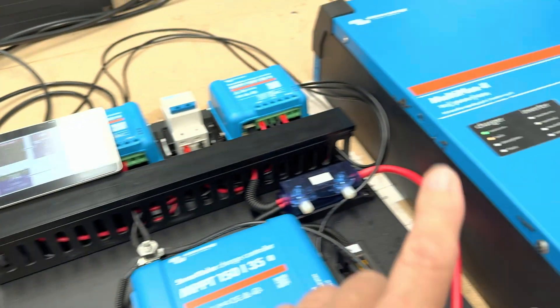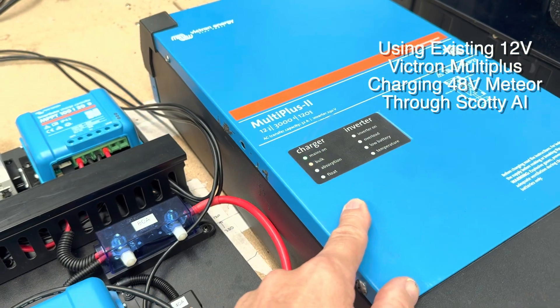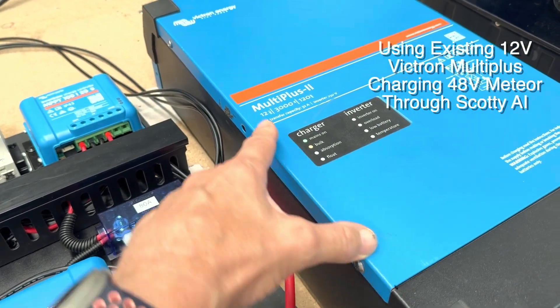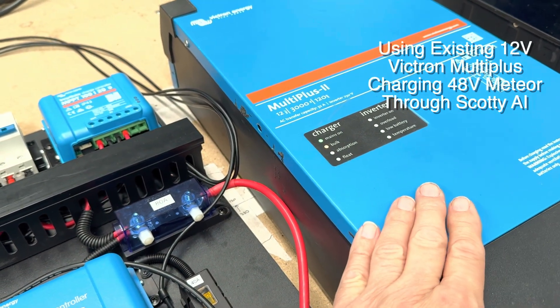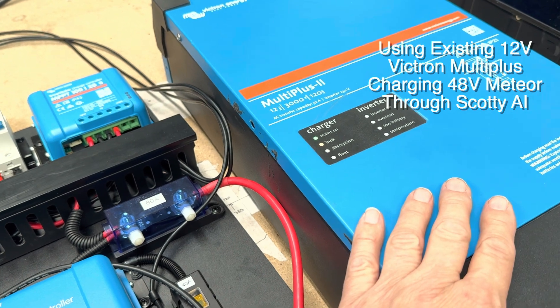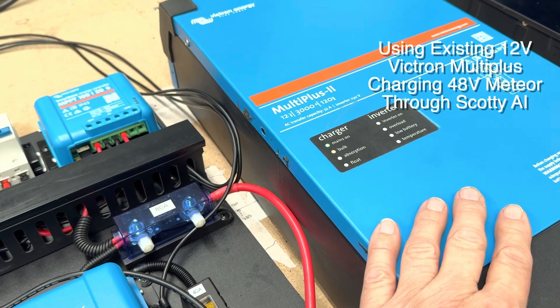But this customer had a 12 volt multi-plus inverter charger, 3000VA and our goal is to try and keep that intact. Then the whole AC certification of the boat doesn't need to change at all.